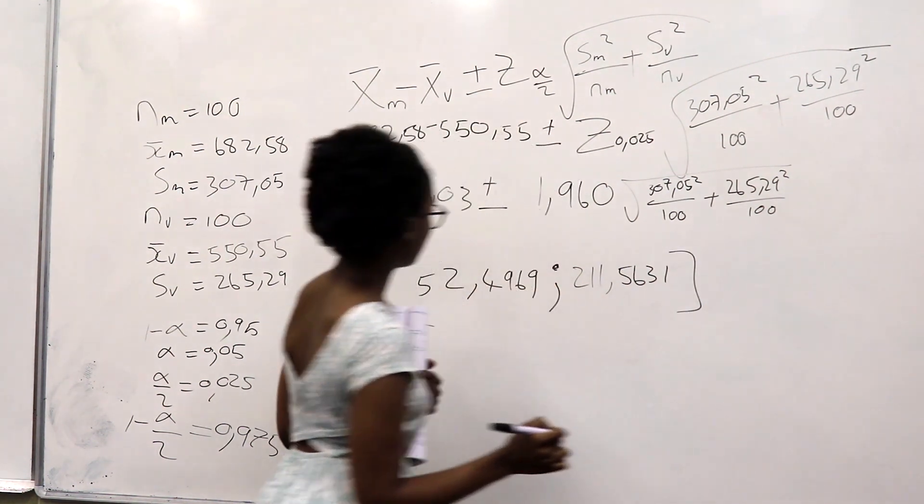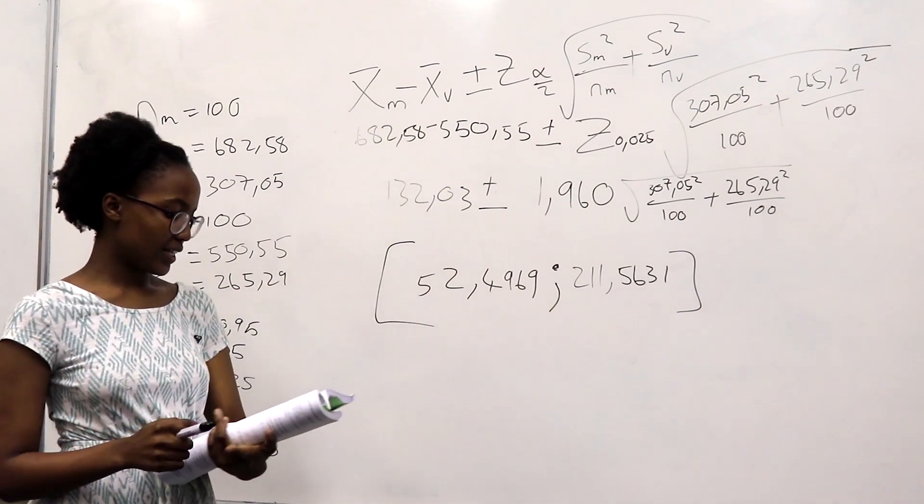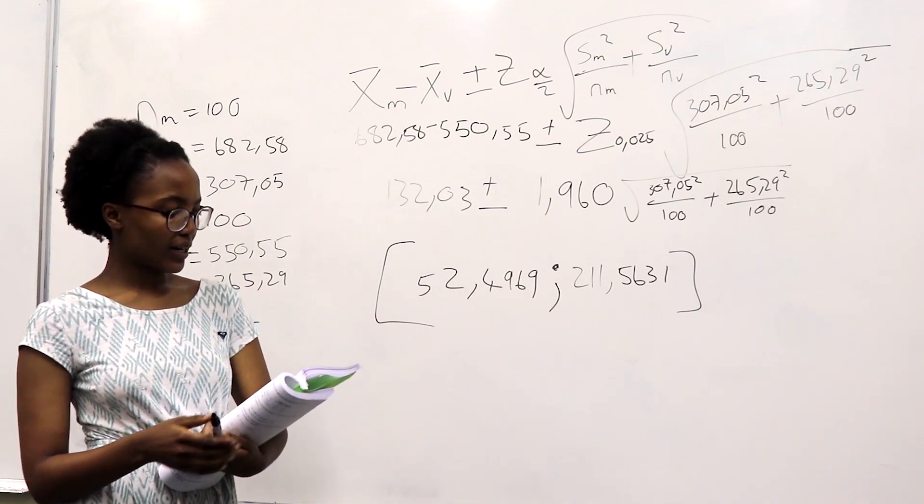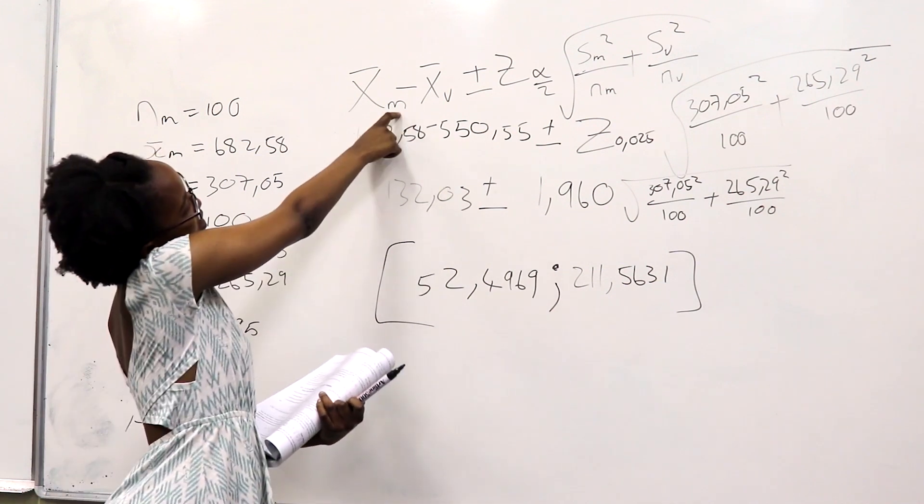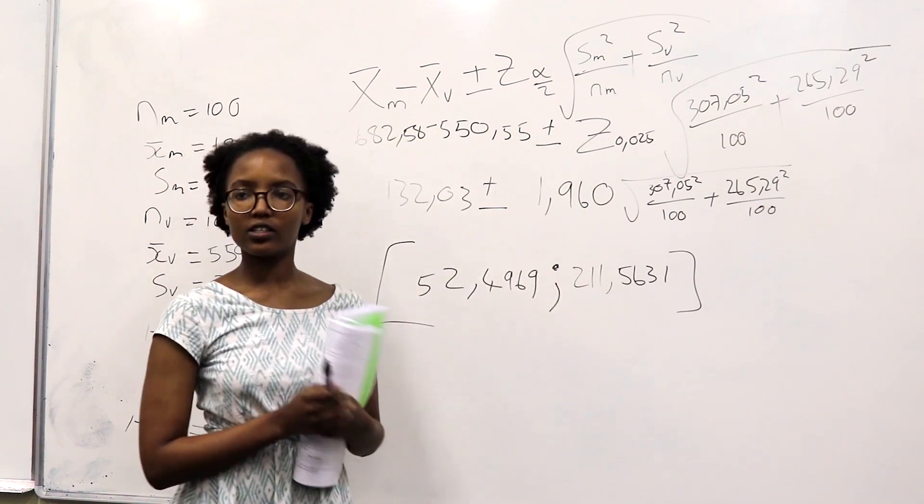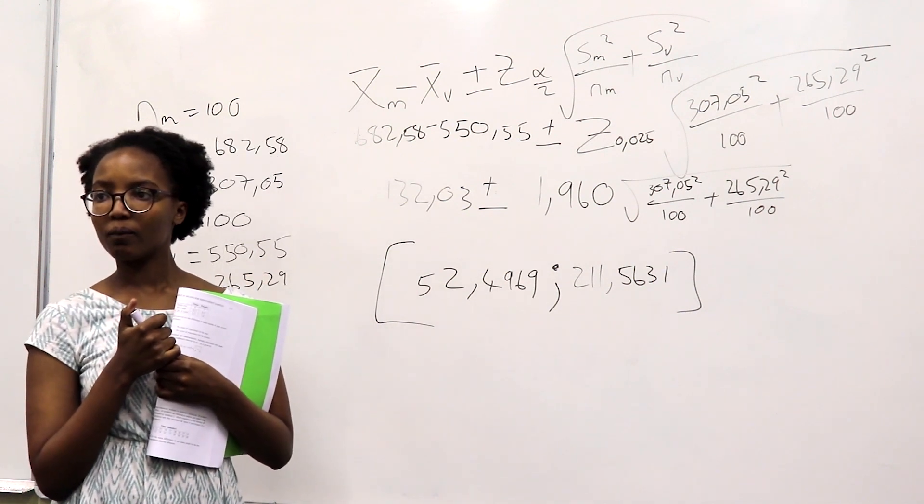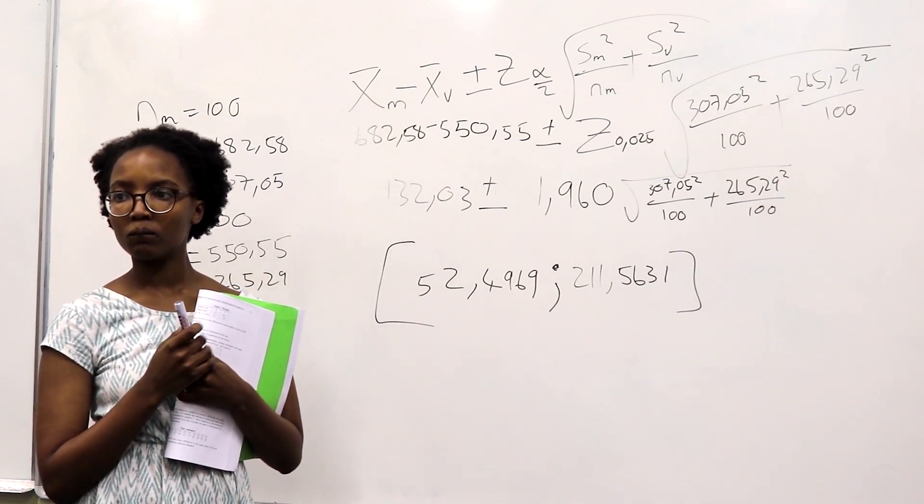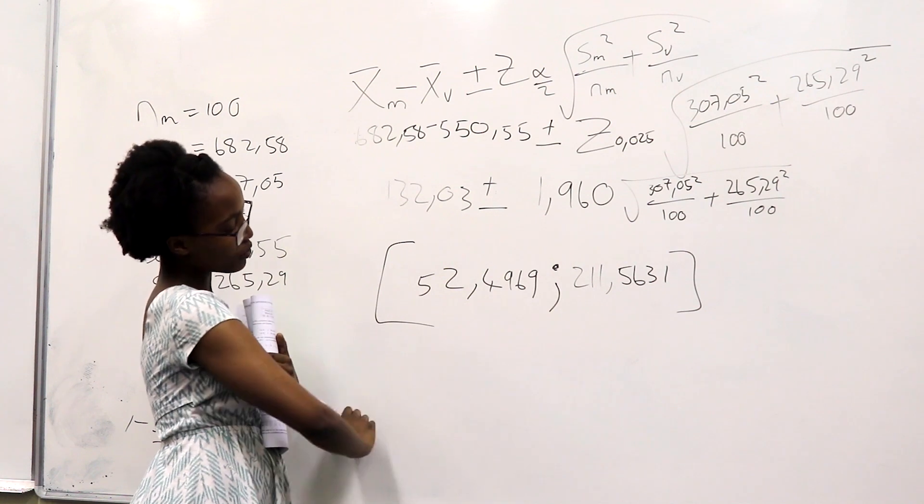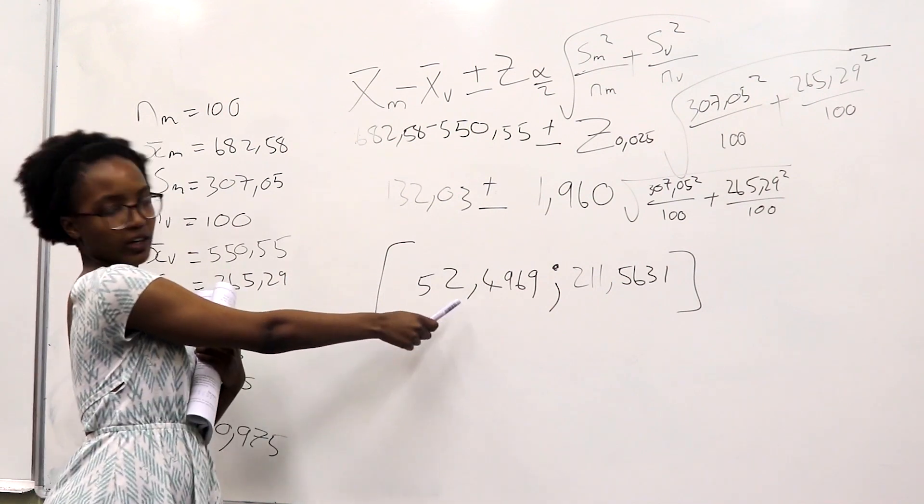Did everyone get the same answer? Okay, so according to this, we can then say that we are 95% confident that the true mean for the month-end account balances for both MasterCard and Visa lies between 52.49 and 211.56. This thing of leaving the answer in four decimal places, do you do it in the final? Over here, you can't leave it like this, and then when you're now writing your summary, it's best to just round off to two or one decimal places because you now have your accurate answer.